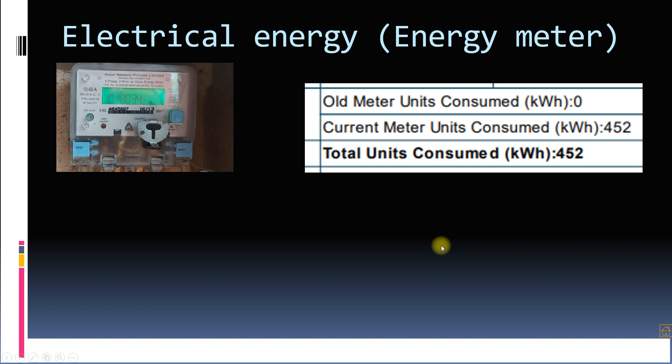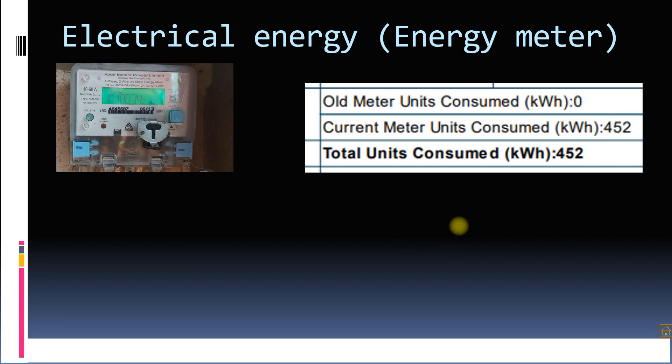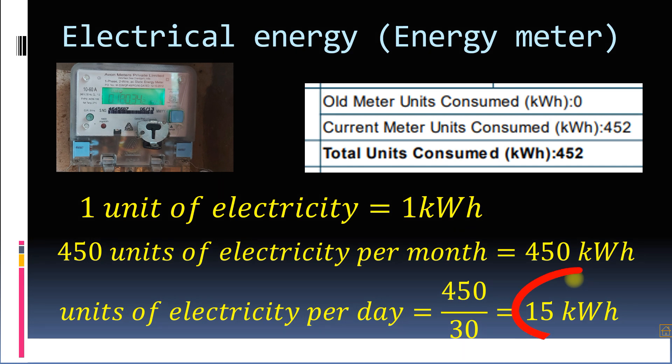You have seen the energy meters in your house which gives the consumption of electricity. Here we will assume that one house consumes around 450 units of electricity in a month. And therefore, electricity consumption in one day comes out to be 15 kilowatt hours. We are considering that all the houses will consume on the average 15 kilowatt hours of energy per day.